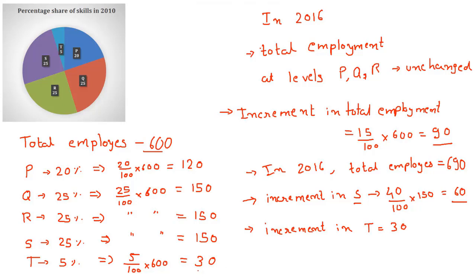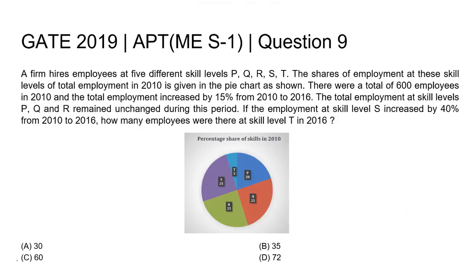Initially in 2010, at skill level T, 30 employees were there. Now by 2016, there were 30 more added to skill level T. Therefore, the total number of employees at skill level T will be 30 plus an additional 30, making them 60. So the correct answer for this question would be option C, which is 60.